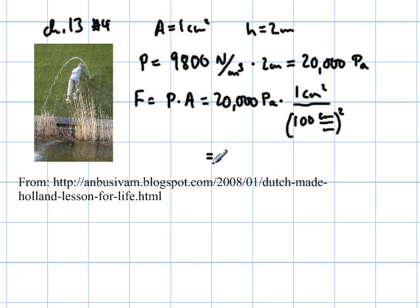And when we do that, we come up with 20,000 divided by 100 and again divided by 100. And we come up with just two, with the units being pascals times square meters, which is newtons.